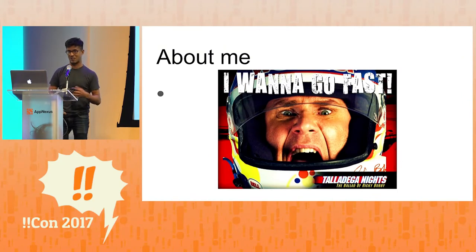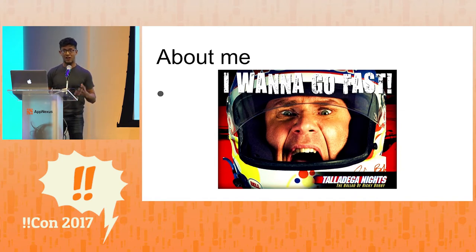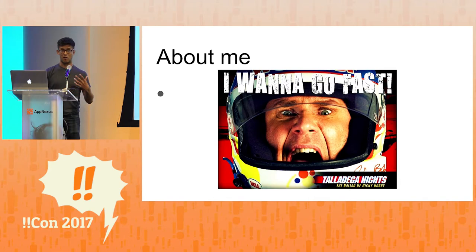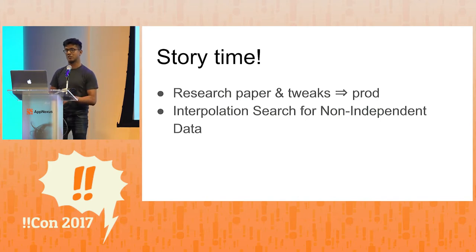About me — typical self-obsessed programmer starting off with himself. This slide sums it up: I want to go fast. More specifically, I want to write fast code. I want to take code that is just an idea and make it as fast as possible. That's what I love about computers. That's why I do this. And that's really what this talk is about, sort of less so than the specific search algorithm.